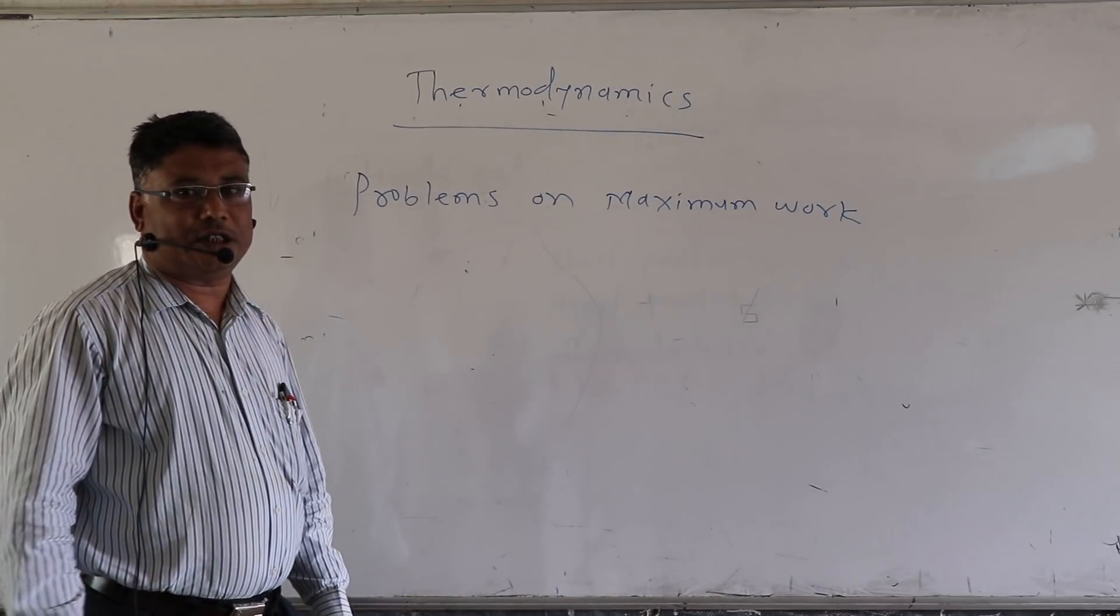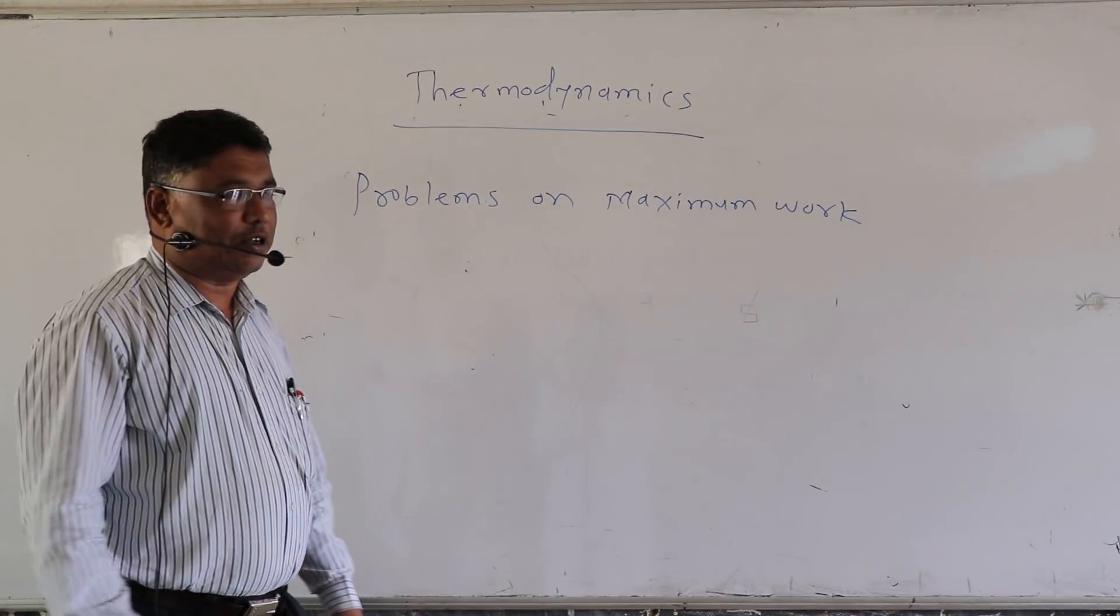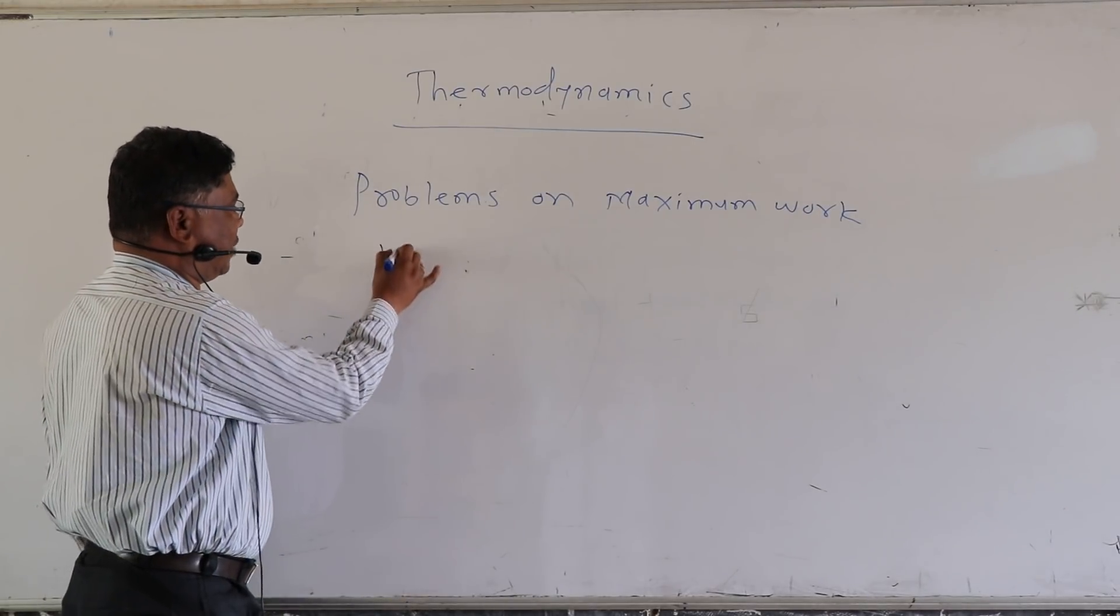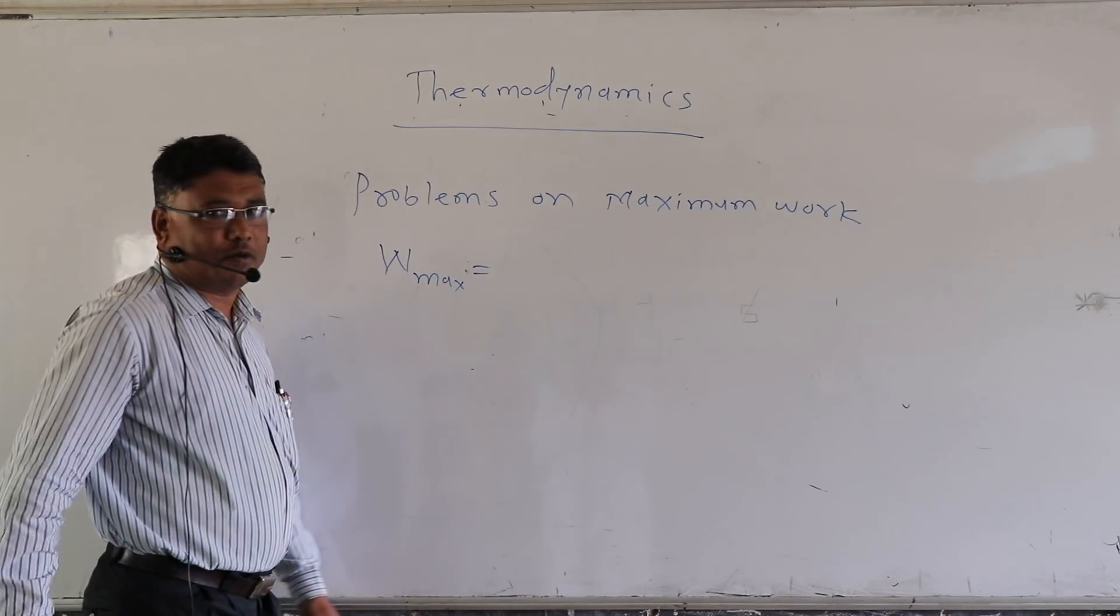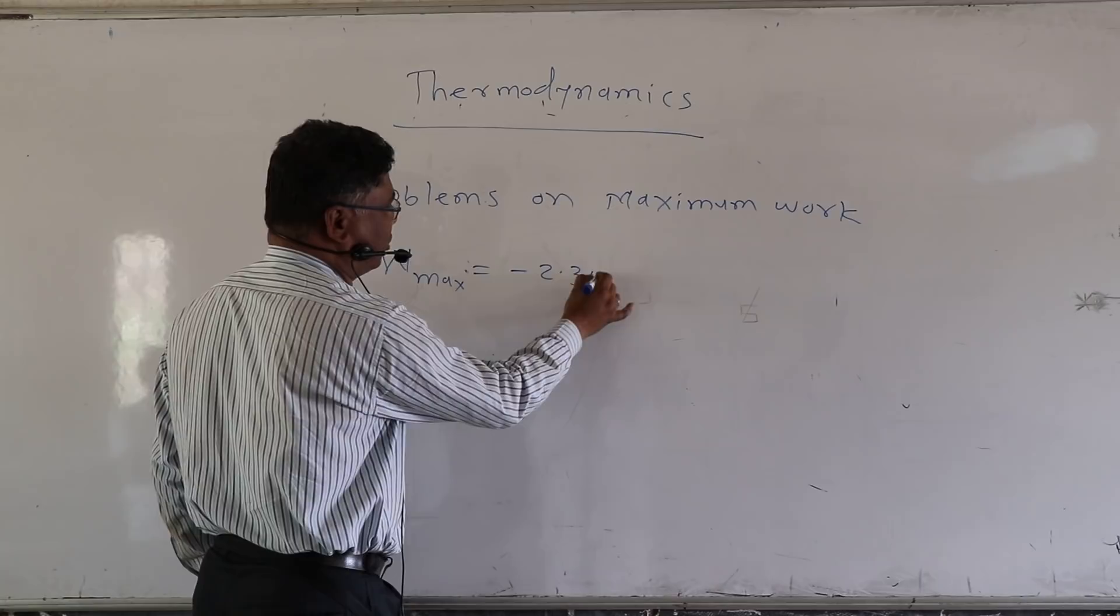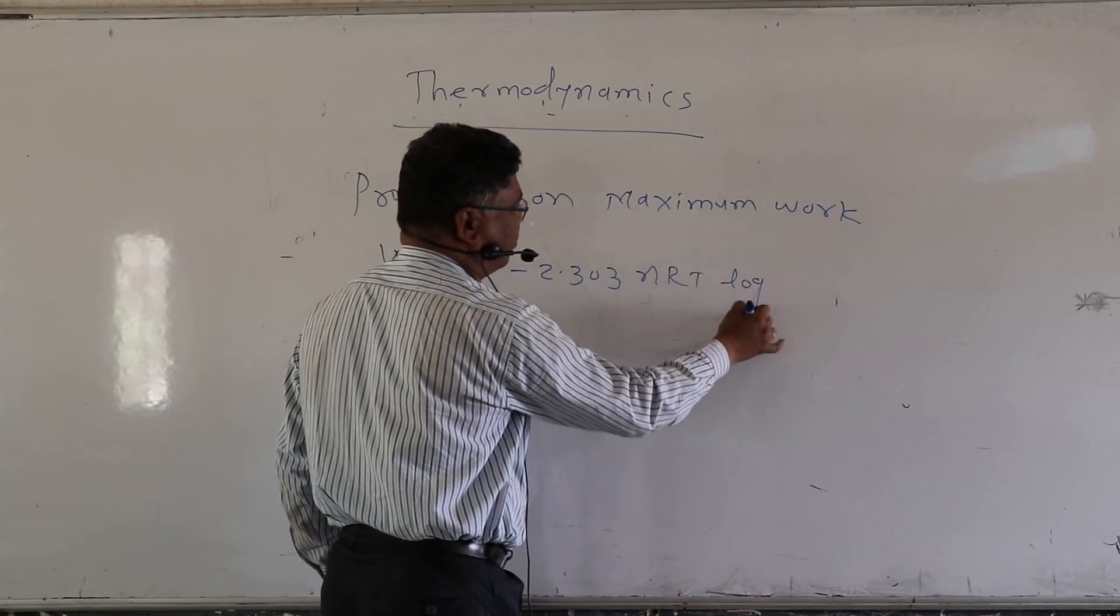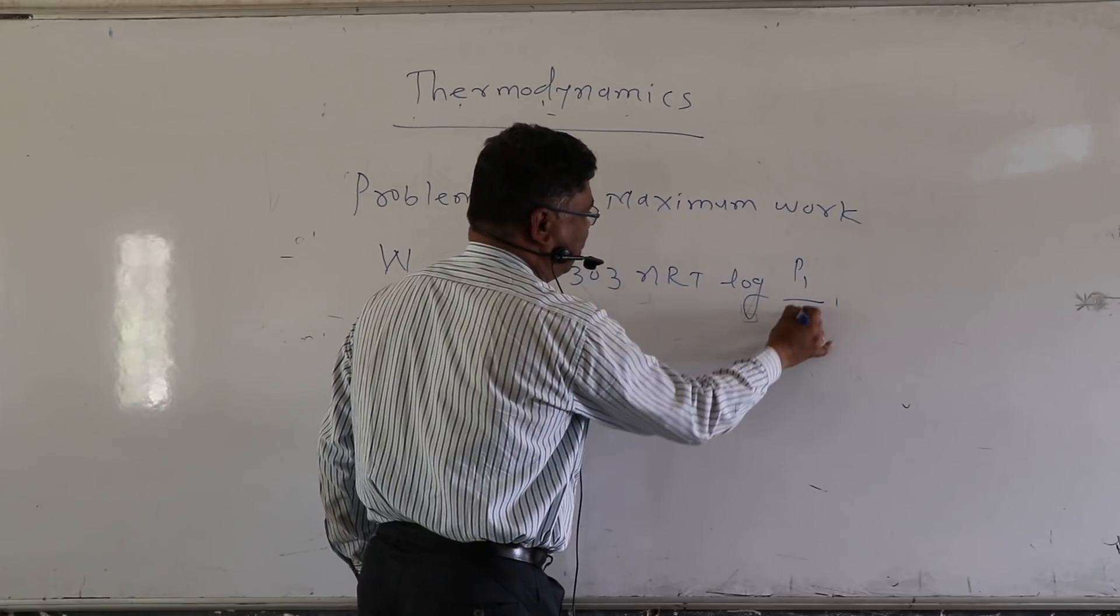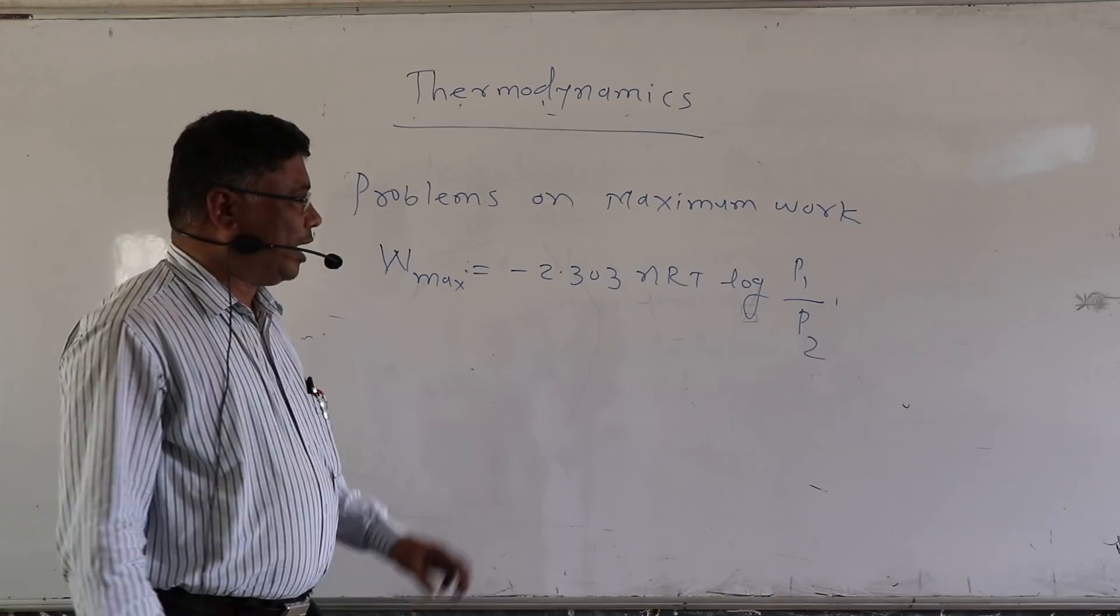As you know that last time we derived the equation for maximum work. The equation is like this. W max, maximum work is equal to minus 2.303 nRT log of P1 upon P2 if pressure is given.